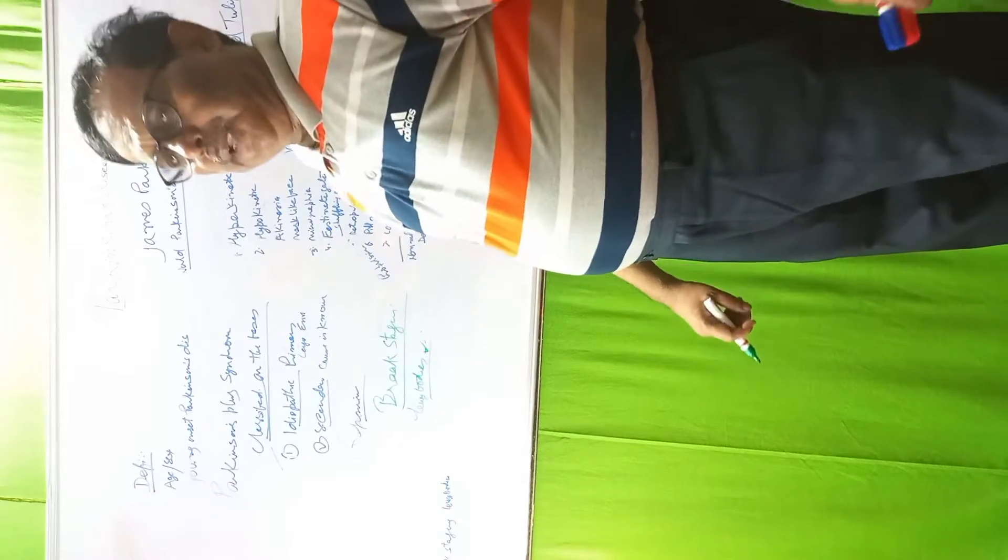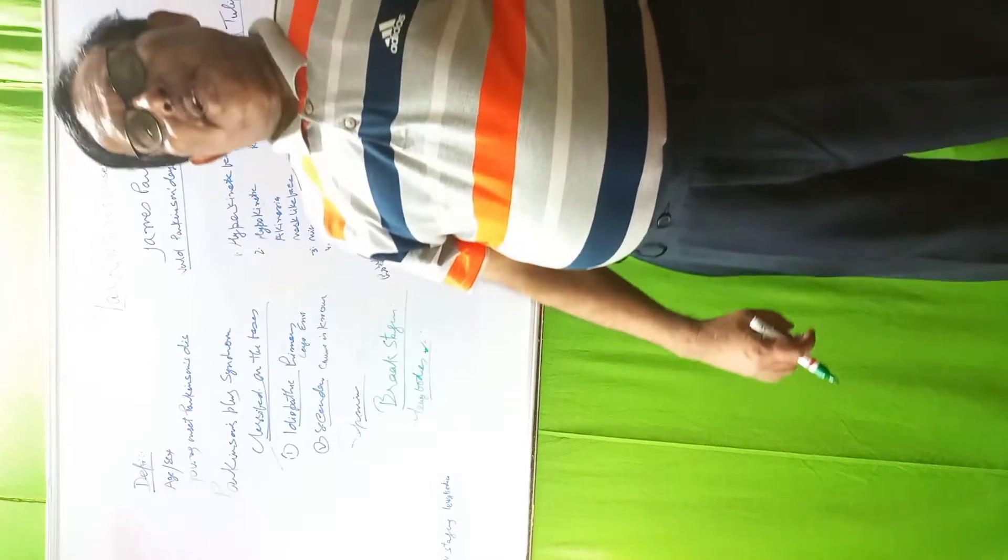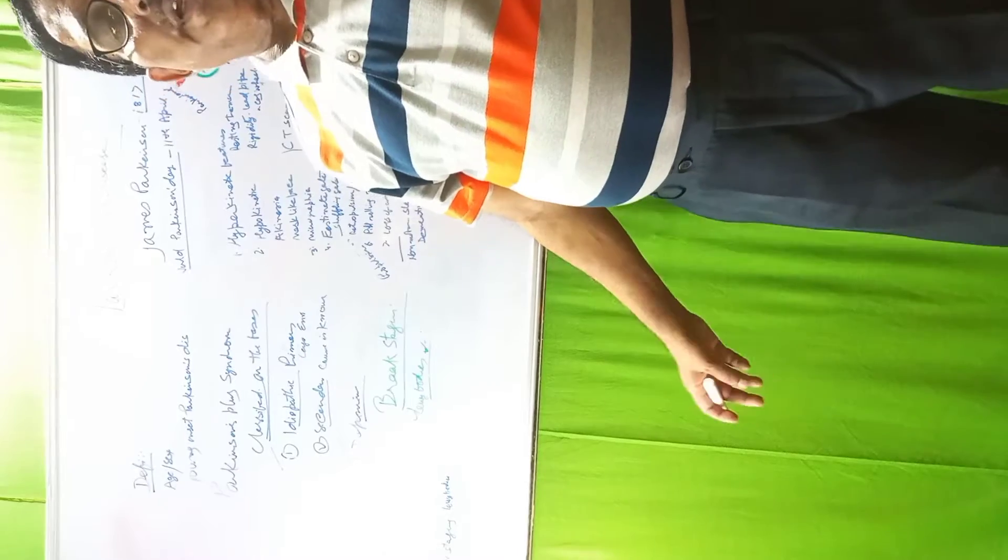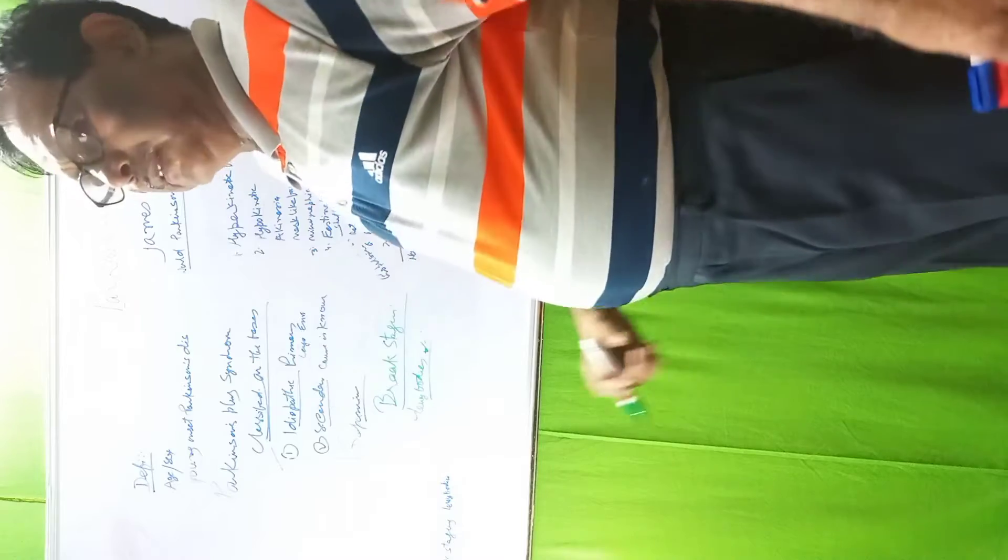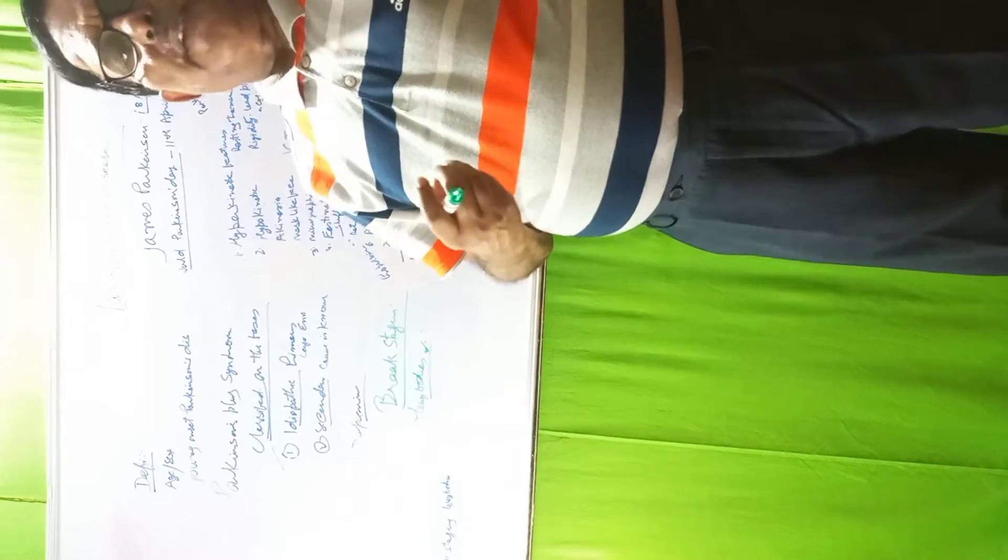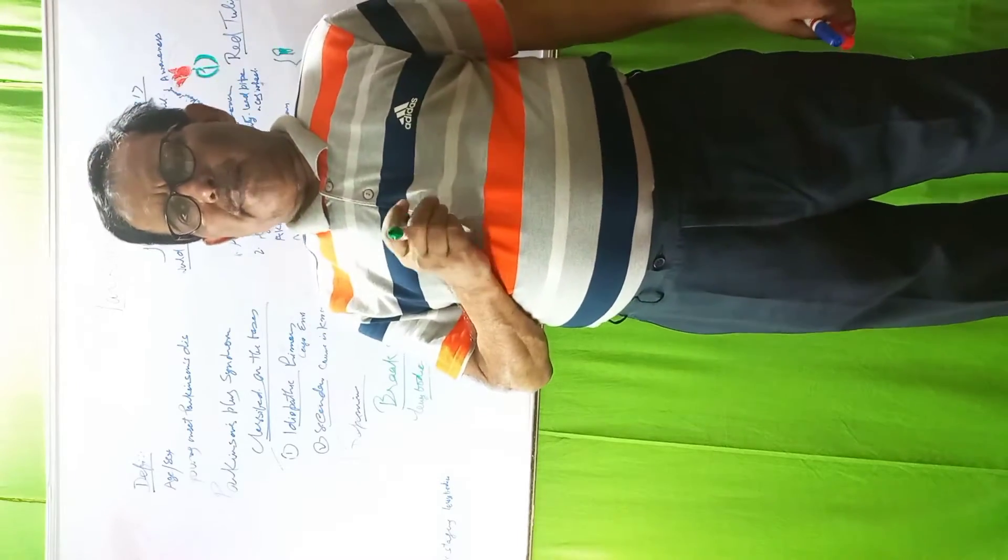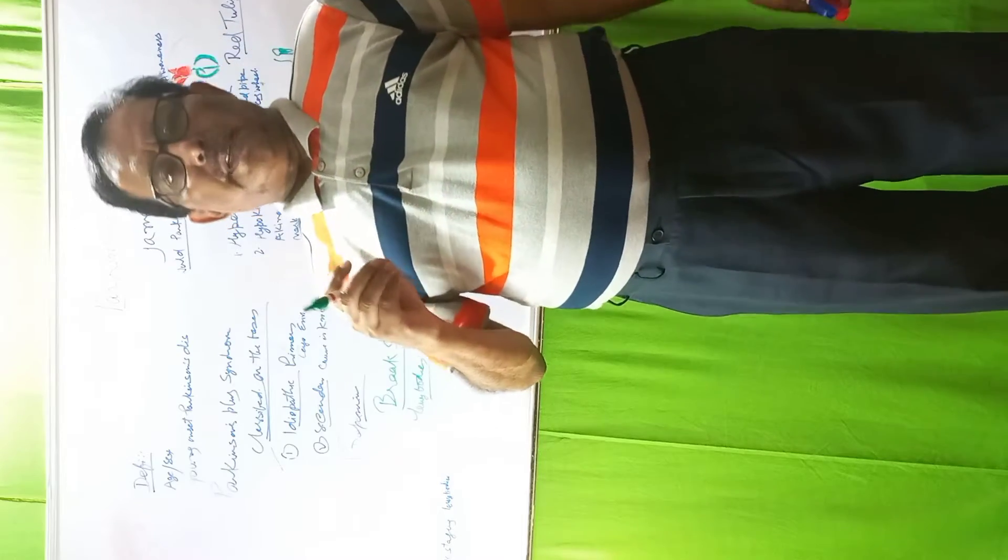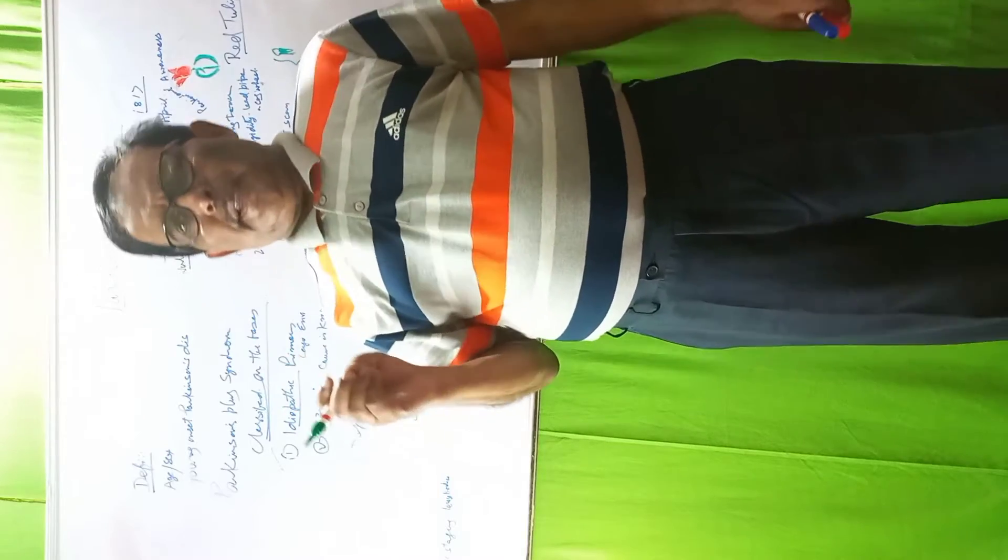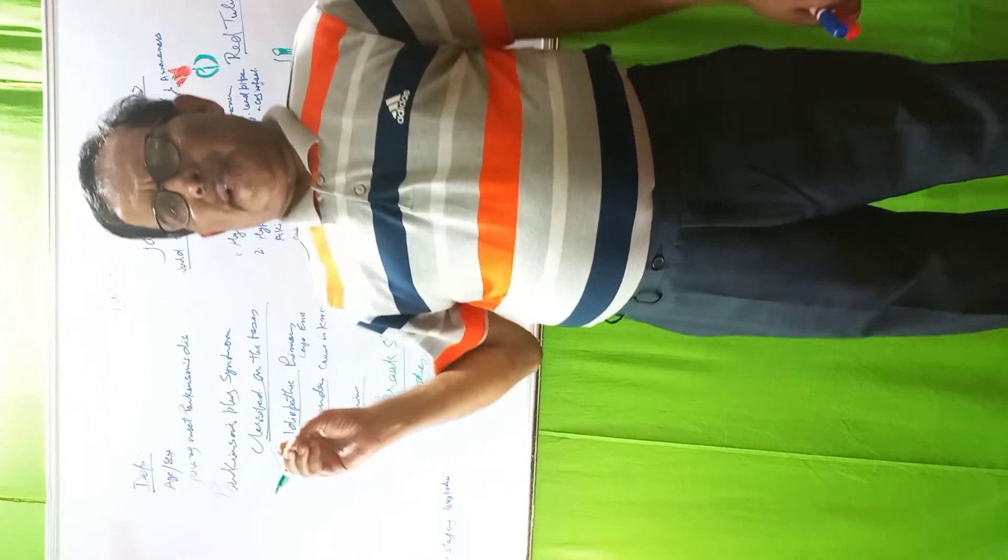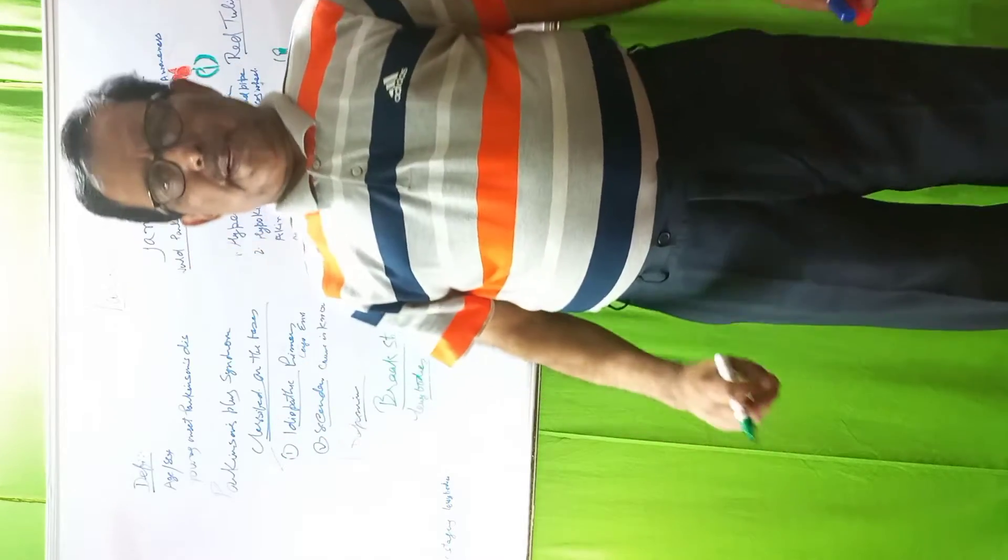Male-female ratio: males are more affected, they are affected two times more than females. Male-female ratio is 2:1. Young onset Parkinson's disease is when this disease appears before 50 years. Parkinson's plus syndrome is when symptoms of Parkinson's disease plus symptoms of other neurodegenerative diseases are collectively present.